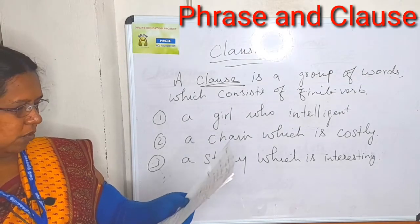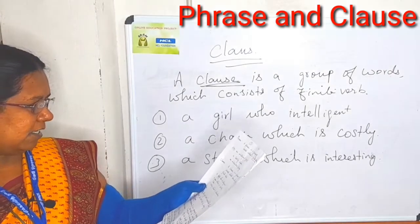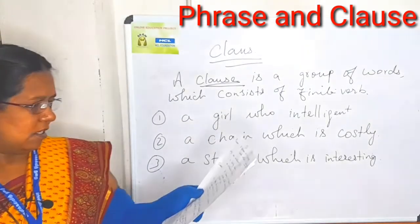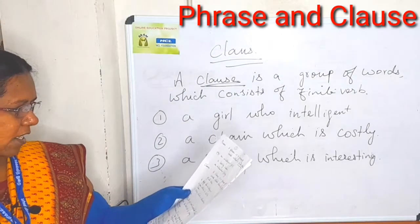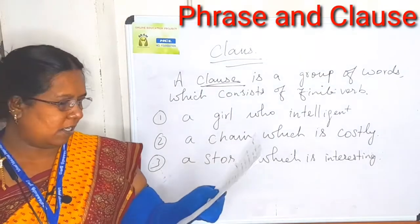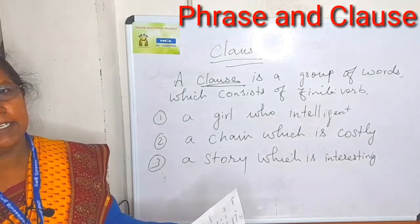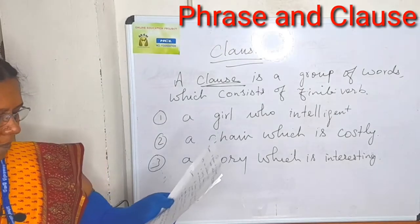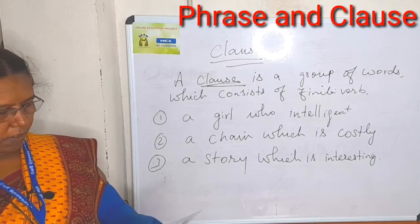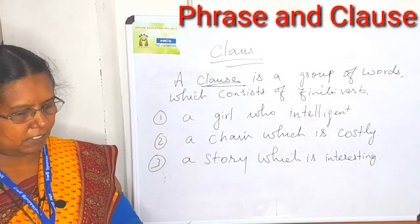Noun phrase — the third one — which acts as a noun. Example: a girl of 10th standard became the house captain. Here, 'a girl of 10th standard' is the noun phrase. Have you all understood? These are the two types — phrase and clause.